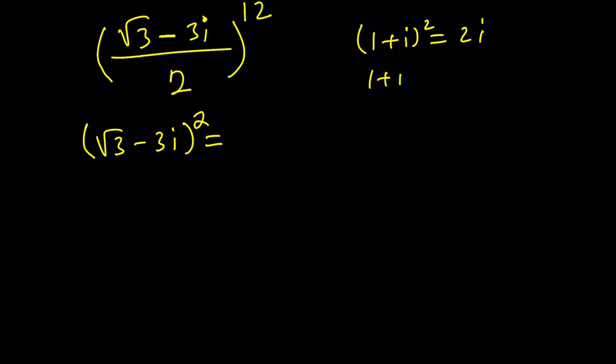For example if you start with 1 plus i and square it you're going to get 2i. If you raise it to the fourth power that means you're squaring 2i which is going to give you negative 4. So it's kind of nice some of these expressions actually simplify really quickly. So let's square this expression. I'll get a squared plus b squared minus 2ab. And that kind of gives me negative 6 minus 6 root 3i.